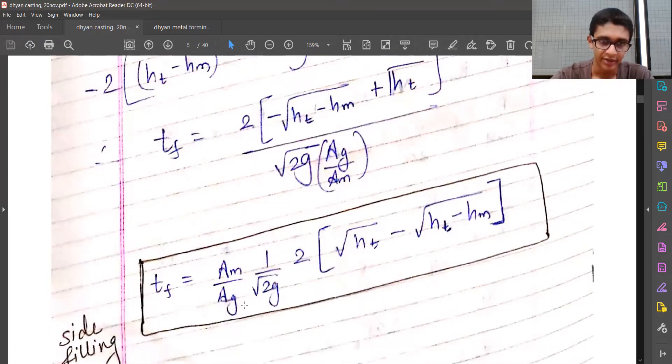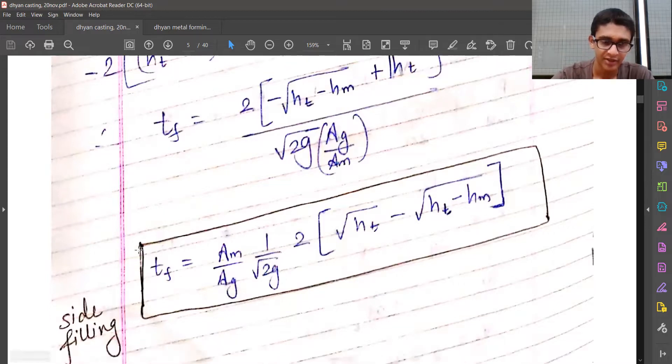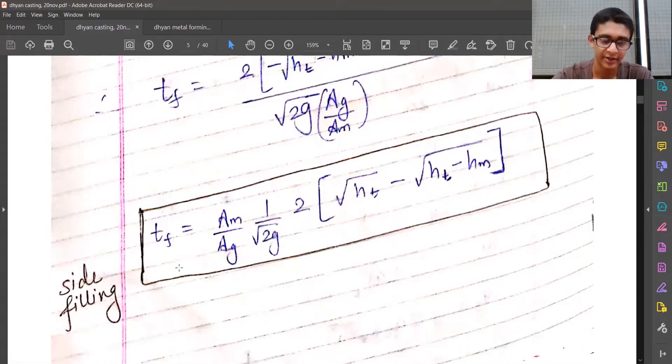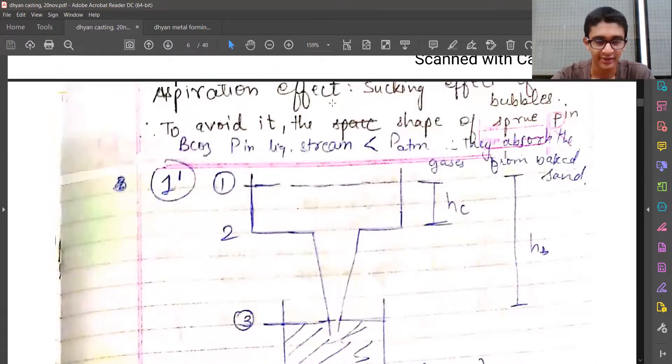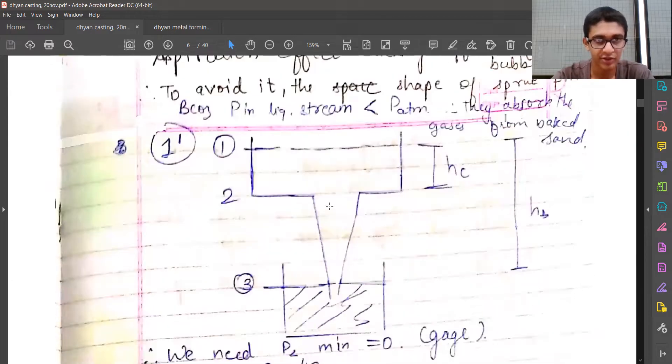I've taken Am by Ag on the numerator, and that's how we get the time to fill the mold in side filling case. You may take a moment to remember this, as you may not be given this equation in the exam if it's closed book. Next, we'll go with the aspiration effect, which I left in the previous video. Thank you.